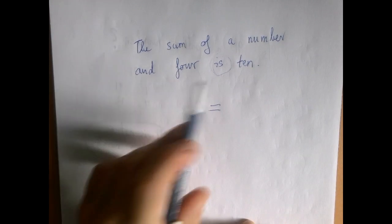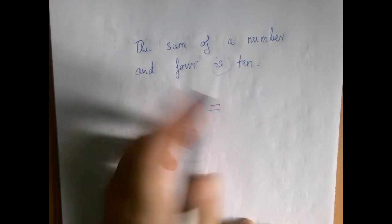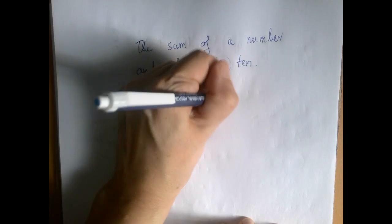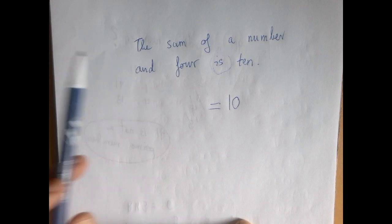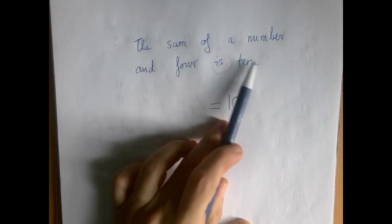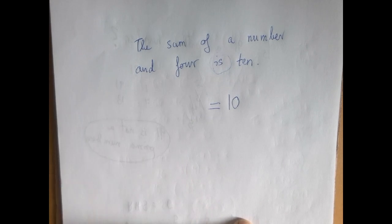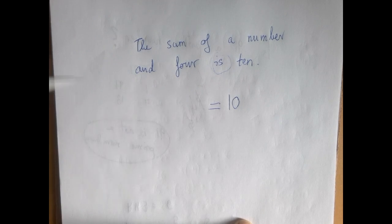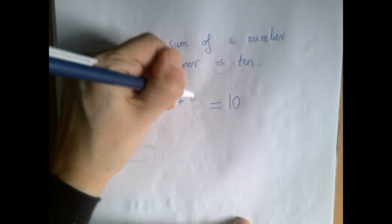So we're comparing two things, saying that they are equal, and the second thing is 10. Now, what is the other side? The sum of a number and 4. So if we use x for our number, the sum of x and 4 is x plus 4.